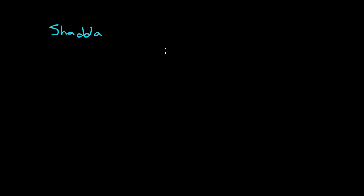Today we're going to go over the Shadda. You might have noticed it in previous videos as a little mark that goes above a letter that looks like a W. This mark indicates that the sound the letter is making is going to be doubled — you're going to say it for a bit longer and then put the vowel on it after.